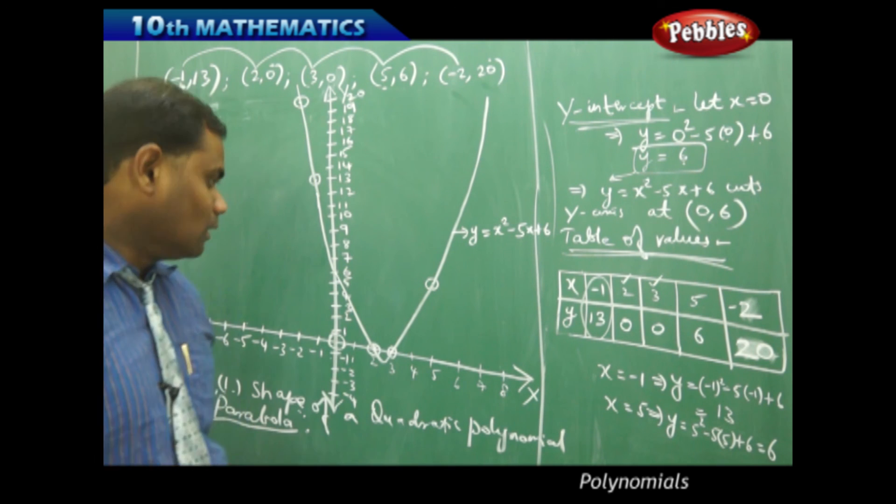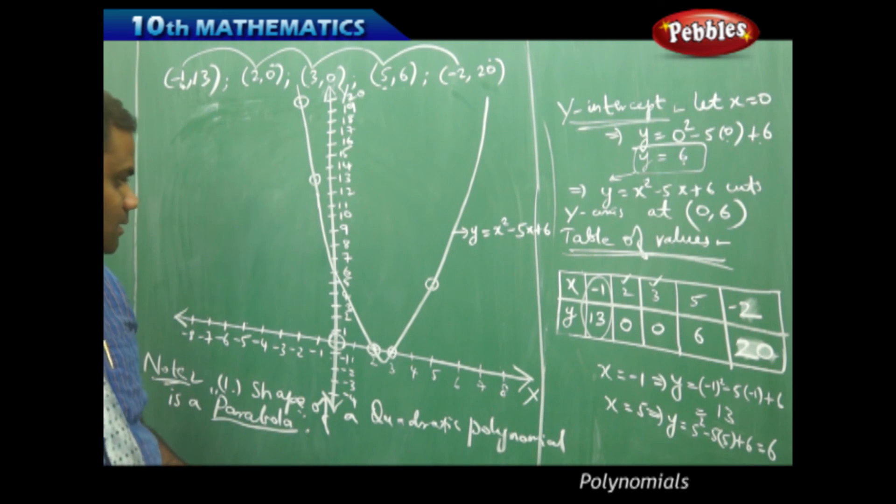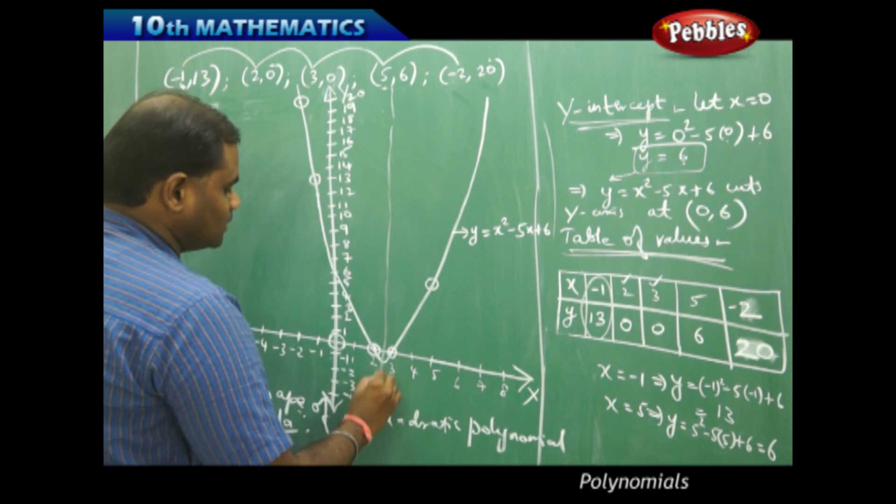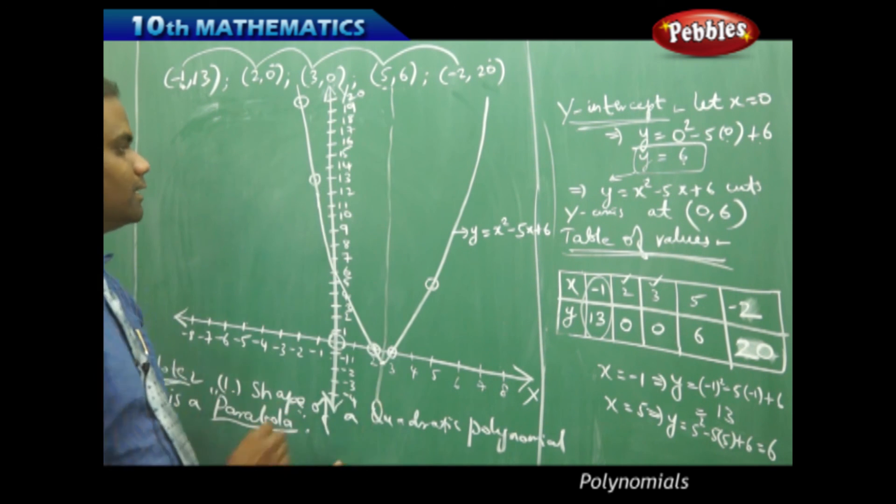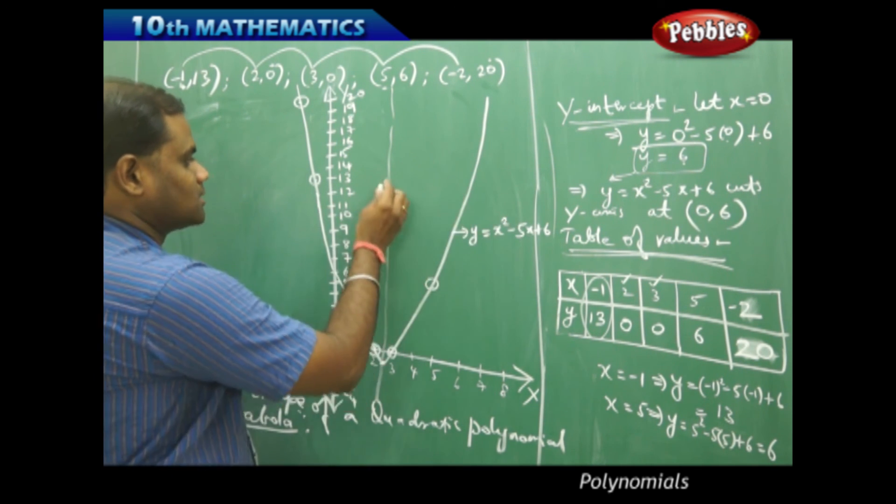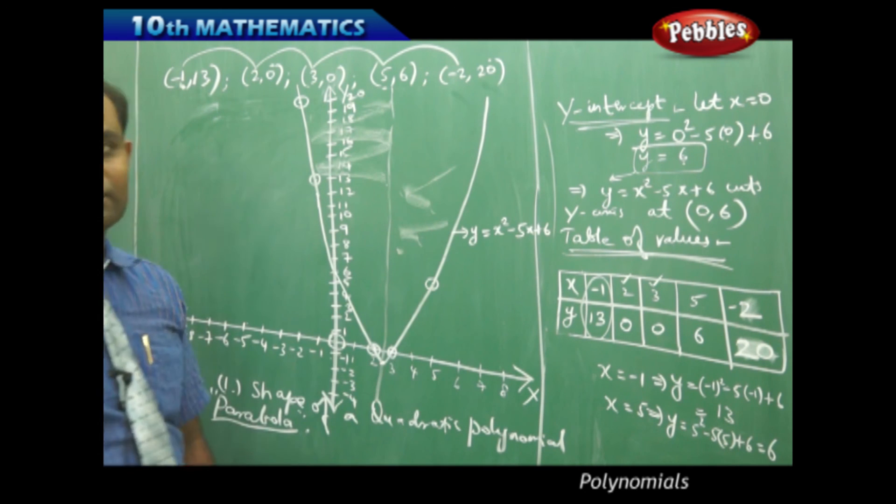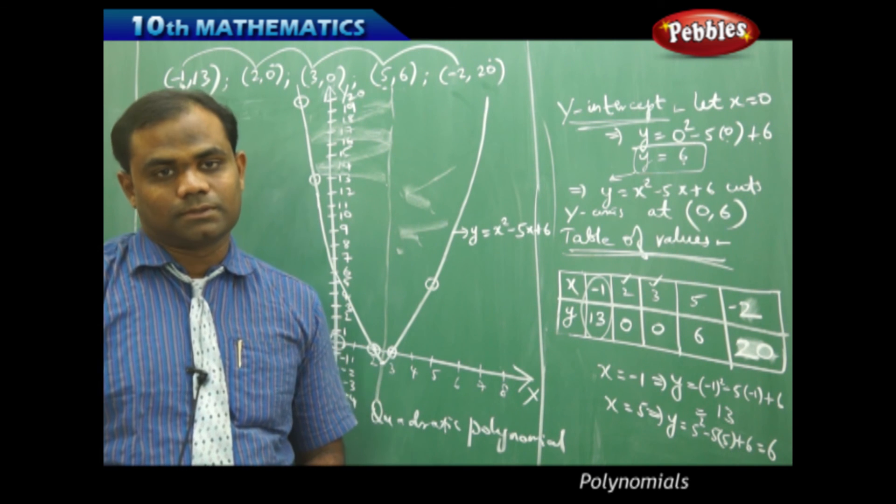Now, one more interesting part here is that the shape is exactly symmetric. If I just draw a line exactly in the middle of the graph, then this is symmetric to the other side. This part is symmetric to this part of the graph. This is how we understand the geometrical concept of quadratic polynomials.